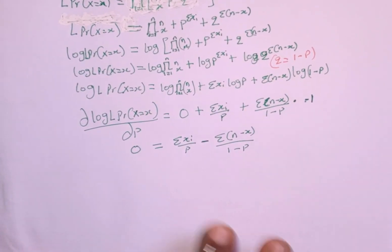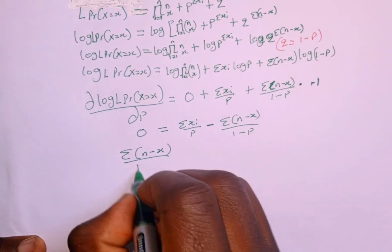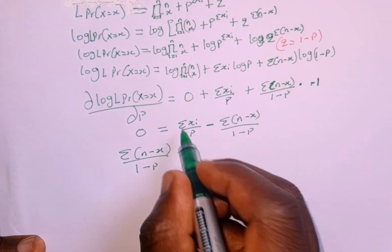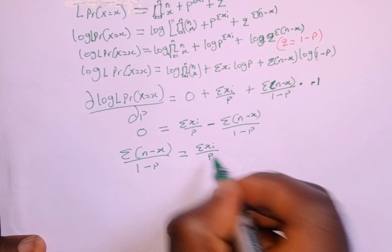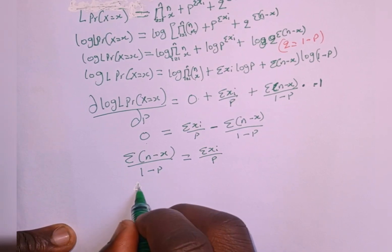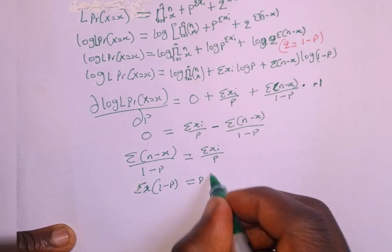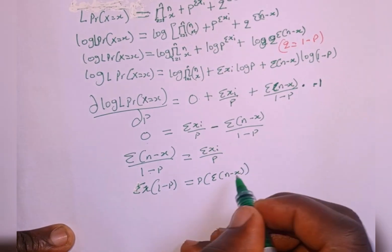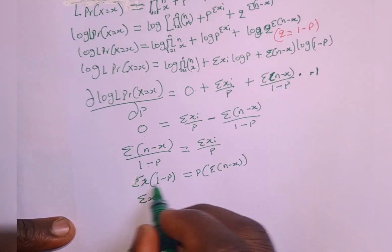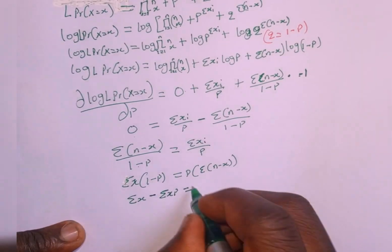Rearranging, we bring the negative term to the other side: summation of (n minus x) over (1 minus p) equals summation of x_i over p. Cross multiplying — this times that, and that times this — we get summation of x multiplied by (1 minus p) equals p multiplied by summation of (n minus x). Expanding: summation of x minus summation of xp equals p times summation of (n minus x).